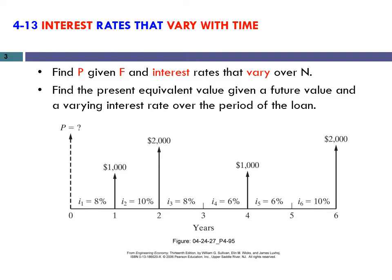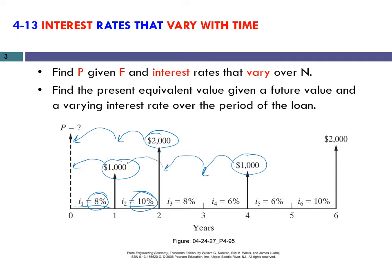Since the interest rates are changing, we need to consider them one by one. We could move each cash flow to time zero period by period — for instance, to move a cash flow at year two back to time zero, first move it to year one with 10% interest rate, then move it to time zero with 8%. Similarly for later cash flows, we move them one year at a time.